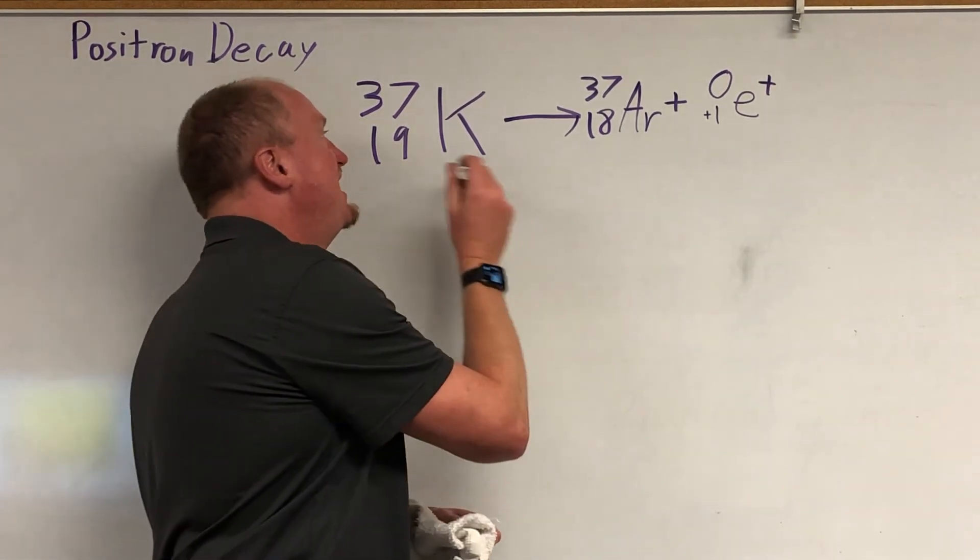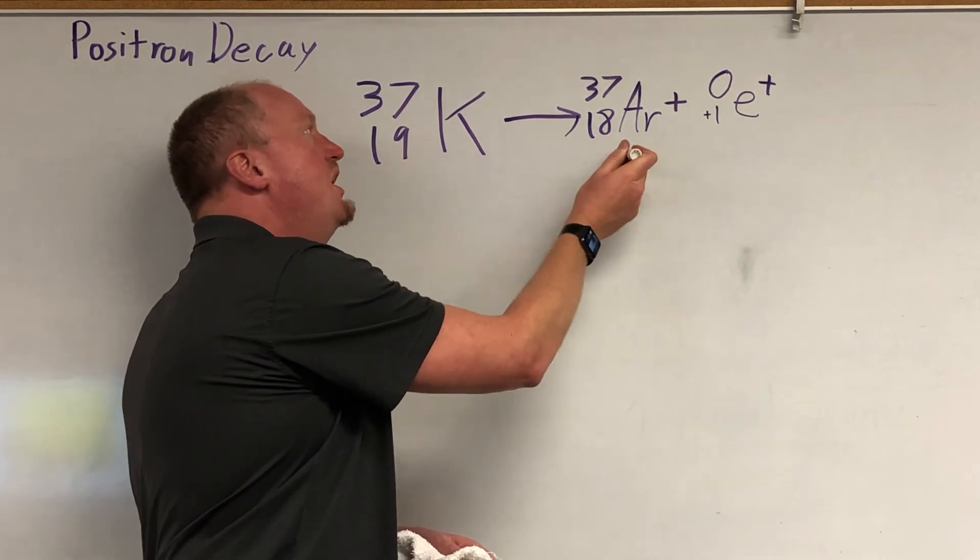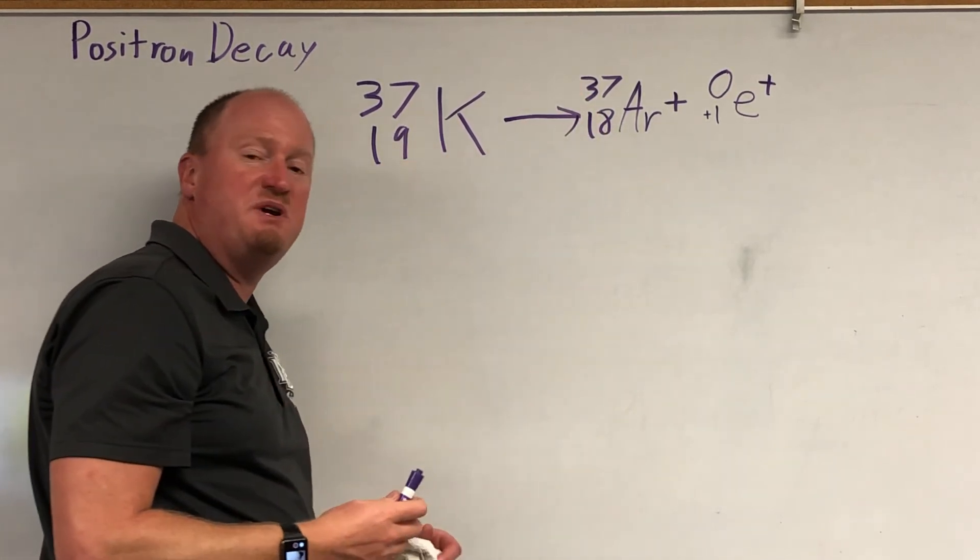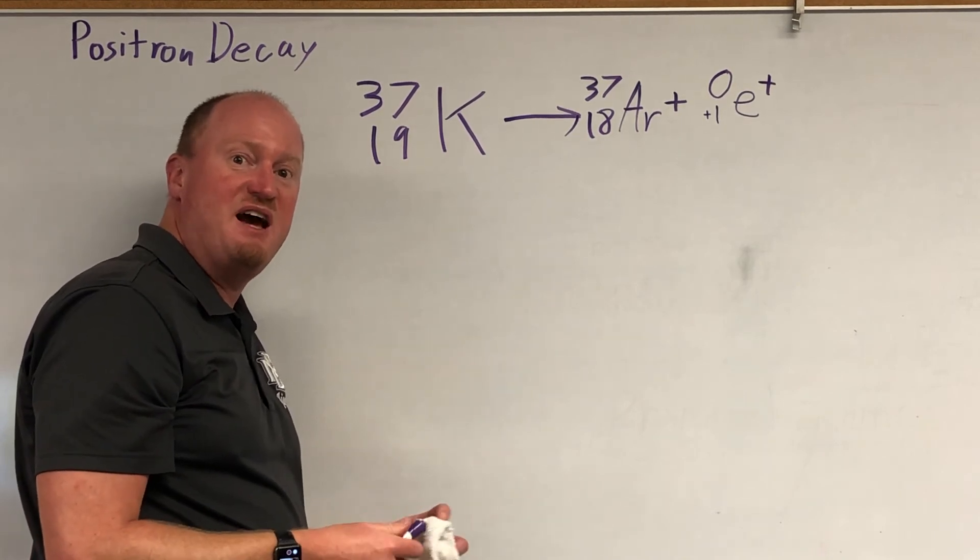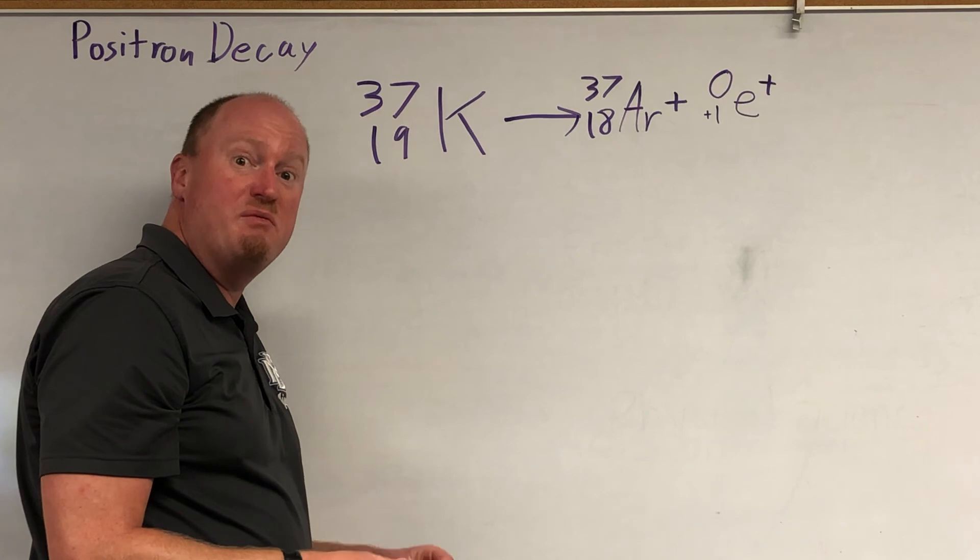So positron decay, your atomic number goes down by one, but your mass doesn't change because an electron's mass is so tiny and an anti-electron's mass is equally tiny that we don't even bother to count it.